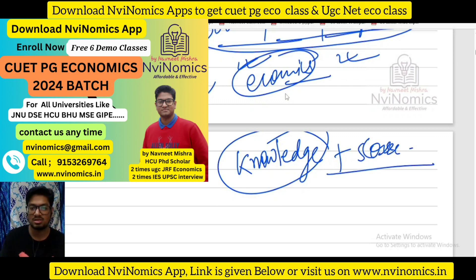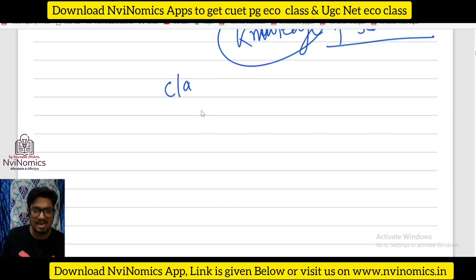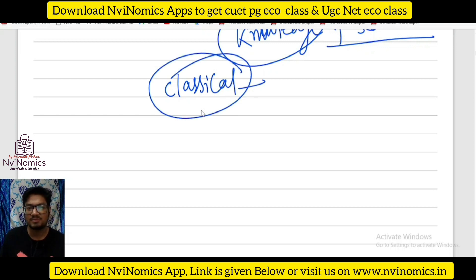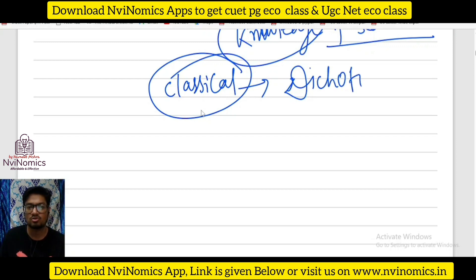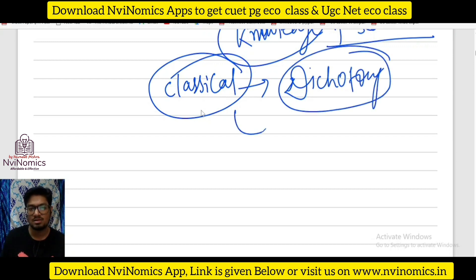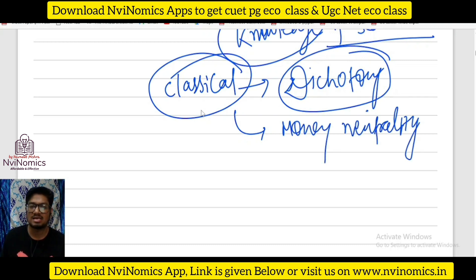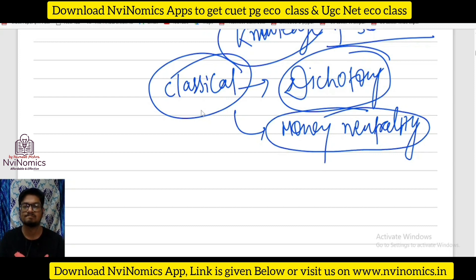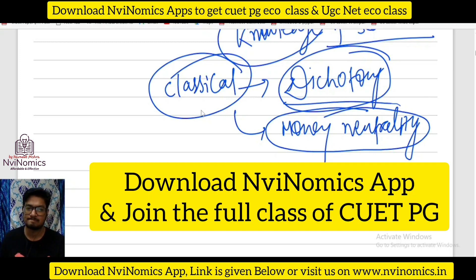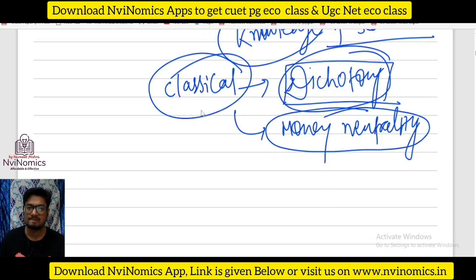So yeah, we have a topic. Let's recap a little bit — classical. At the end of classical, I told you about classical dichotomy. Can somebody just give a hint — what is classical dichotomy? Revision is very very important. Anyone? What is classical dichotomy and money neutrality? Sir — the difference between real and nominal factors.